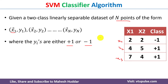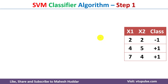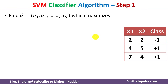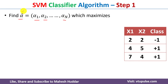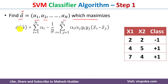Now let's understand the different steps in the SVM classifier algorithm. In the first step, we need to find the alpha vector. The alpha vector is a combination of alpha values — in this case with three examples, we need to calculate alpha1, alpha2, and alpha3. In general, for N examples we calculate alpha1 through alphaN. We find the alpha vector that maximizes the objective function phi(alpha).